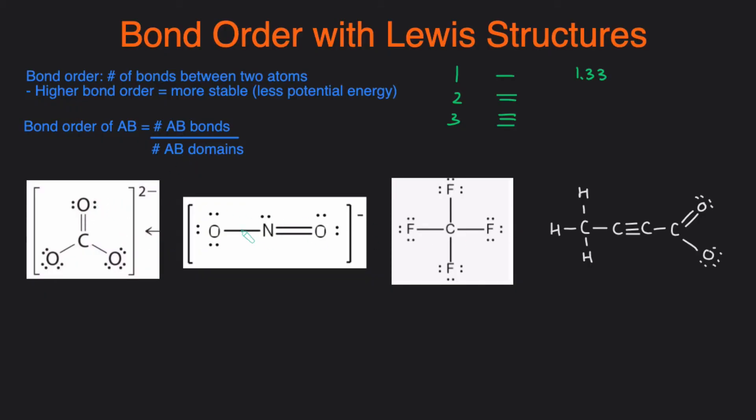So for each of these structures, we're going to determine the bond order. Of course, if you're just given a formula, you first have to draw a Lewis structure. So if you're having difficulty drawing Lewis structures, definitely check out my video where I quickly go over how to do that in steps. But we have Lewis structures all here, so let's jump in and take a look at some bond orders.